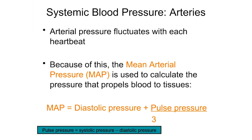Pressure in the arteries fluctuates: it's higher during systole when the heart is contracting, and lower during diastole when the heart is relaxed. Because of this fluctuation we calculate what's known as the mean arterial pressure, or MAP, to get an average pressure in a blood vessel. This allows us to know how much pressure is driving blood to the tissues of the body.